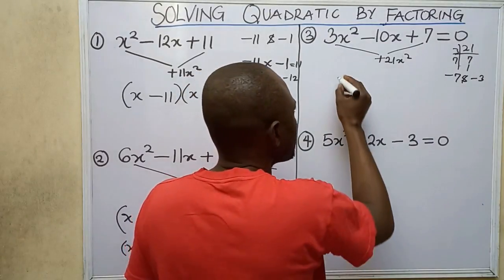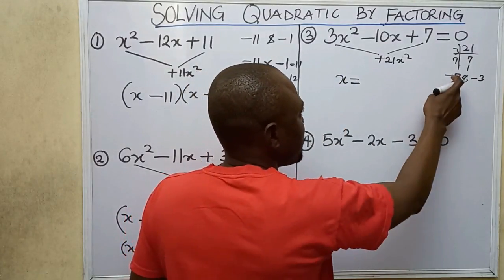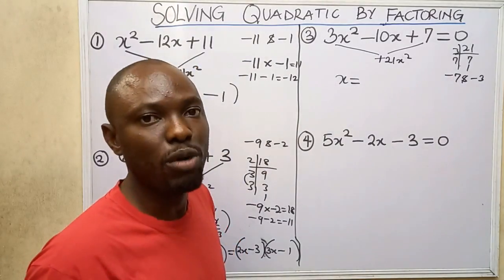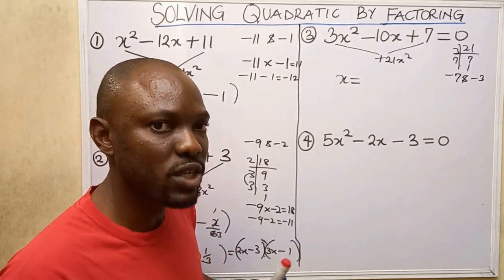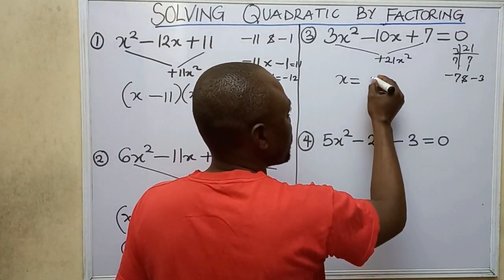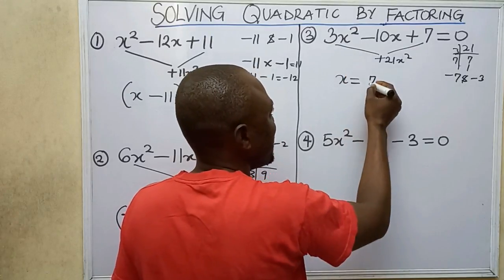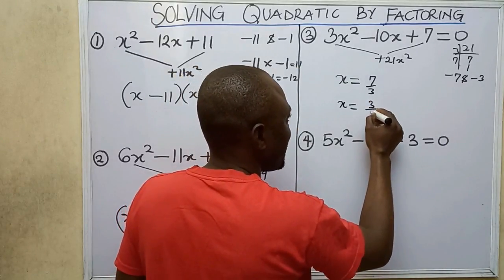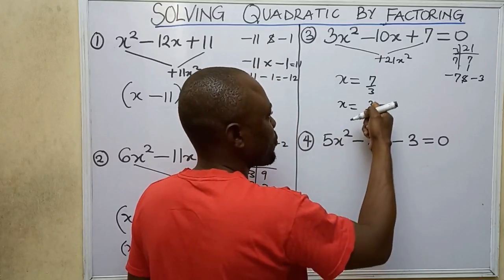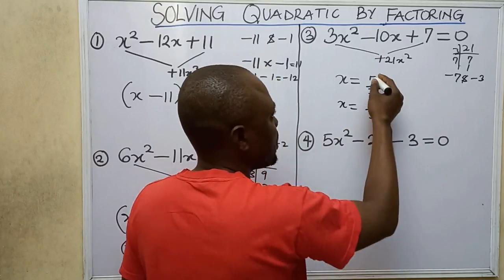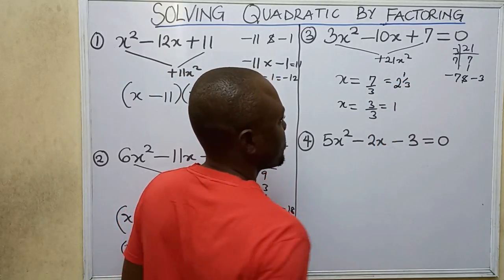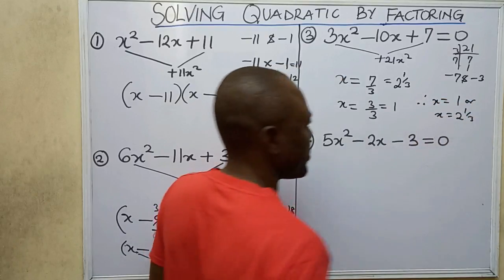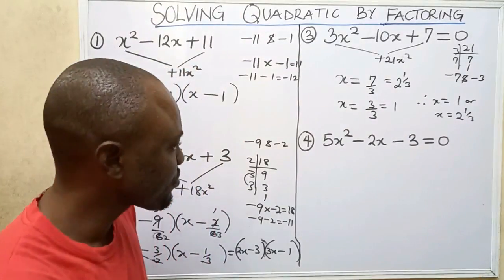Since I want values of x, I go straight to x equals. If factors are negative I make them positive, if positive I make them negative. I have minus 7, so I change it to plus 7 divided by the leading coefficient 3 — that gives 7 over 3, which is 2 and 1 over 3. I have minus 3, changed to plus 3 divided by 3 — that gives 1. Therefore x equals 1 or x equals 2 and 1 over 3.